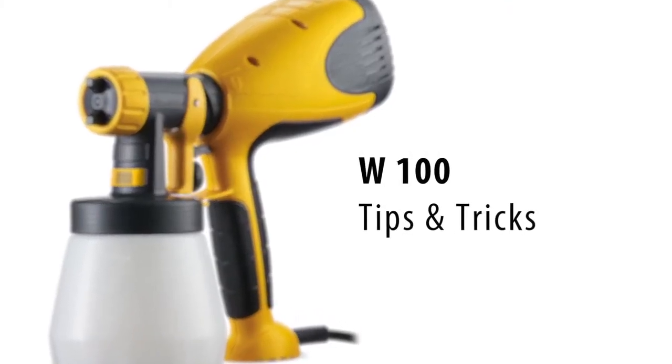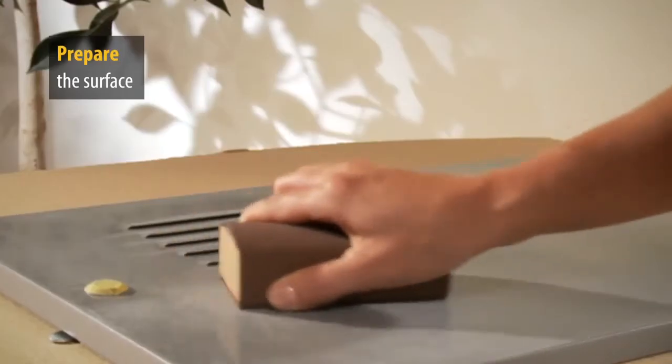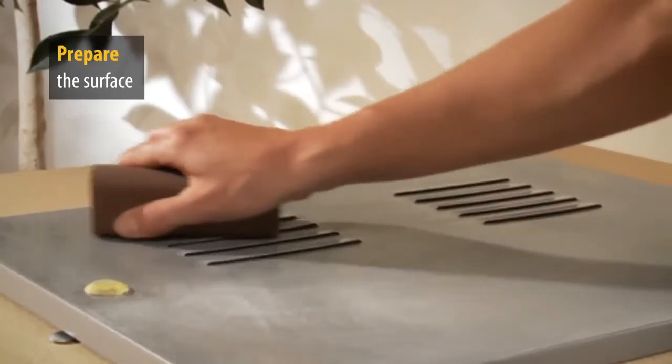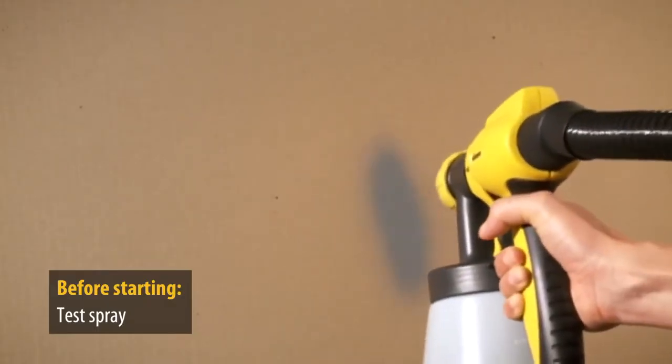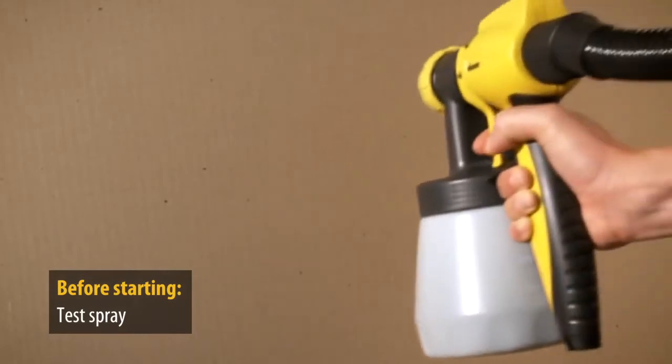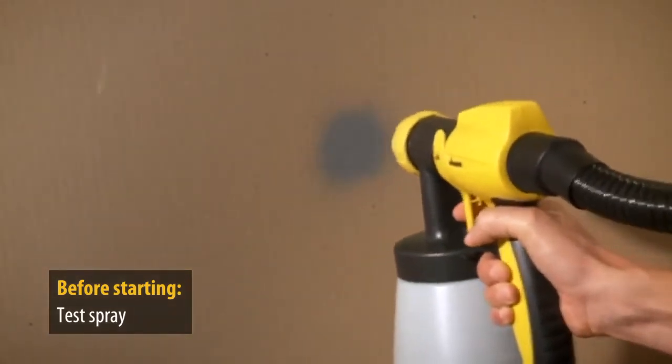Here are some useful tips and tricks for spraying with the W100 wood and metal sprayer. Of course, if you want to achieve the best possible results, it is advisable to prepare the surfaces properly beforehand. Do a test spray before starting work in order to get the right results and adjust the spray setting as required.